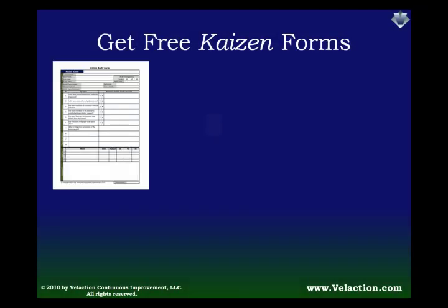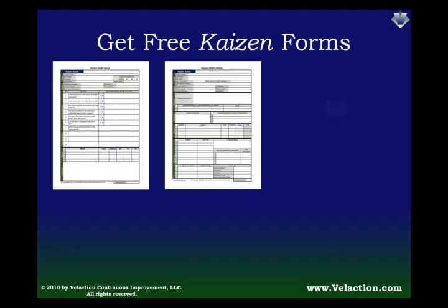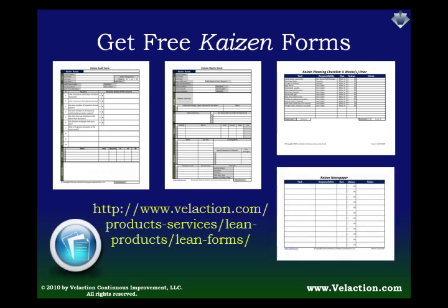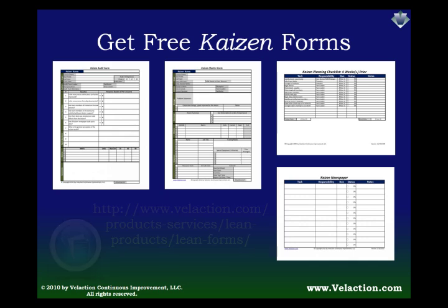To help you get started in your Kaizen efforts, we offer many free forms on our website at velaction.com. These include our Kaizen charter and checklist to help you plan your Kaizen, our Kaizen newspaper to get things done effectively, and our Kaizen audit form to make sure that the changes you make stick.